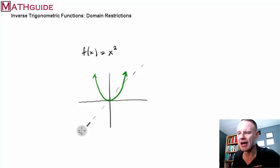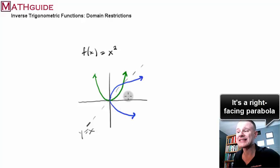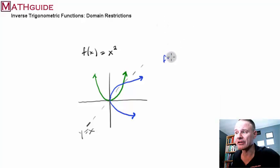If we wanted to find the inverse of this parabola, we would take a diagonal line, in other words, y equals x, and we would reflect it over that diagonal line. And what we would get is a sideways parabola. There's an issue here, though, because this inverse, which is a sideways parabola, is not a function.